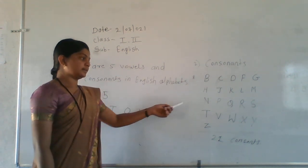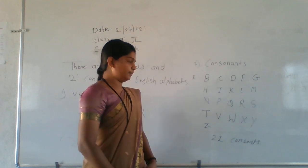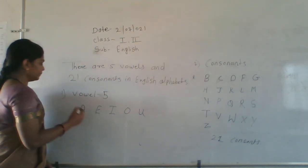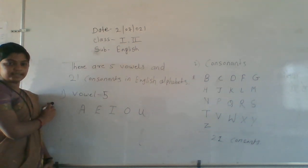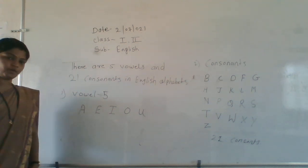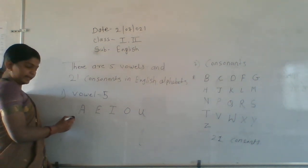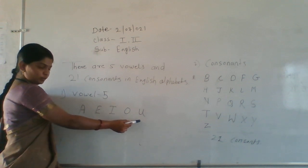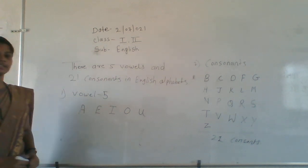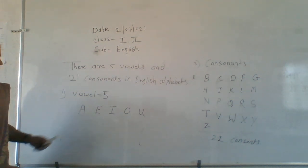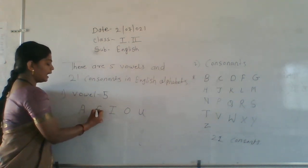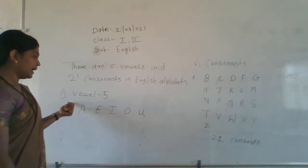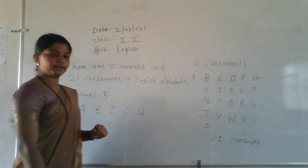Read with your parents at your home. A, E, I, O, U. How many vowels are there? Five vowels. A, E, I, O, U. Repeat — tell me again: A, E, I, O, U. There are five vowels.